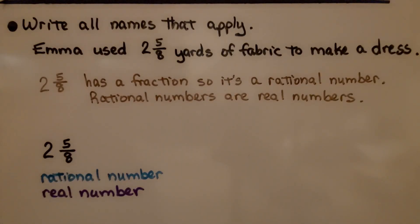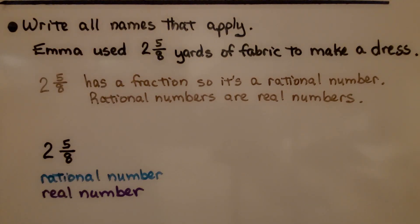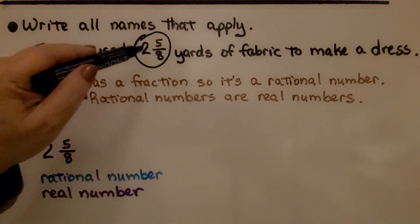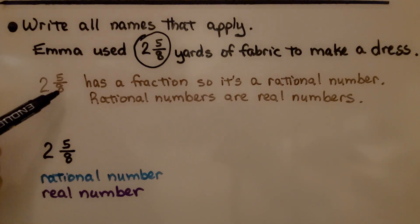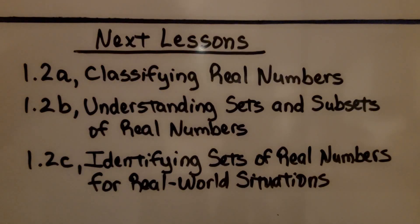Again, it's telling us to write all names that apply. It says Emma used two and five eighths yards of fabric to make a dress. We need to write all the names that apply to the mixed number two and five eighths. It has a fraction, so it is a rational number, and rational numbers are real numbers. So two and five eighths is a rational number and a real number. We're finished with the first part of the lesson — we've got two more to go.